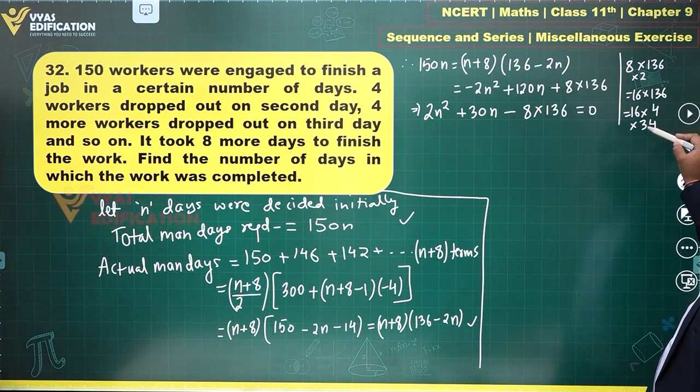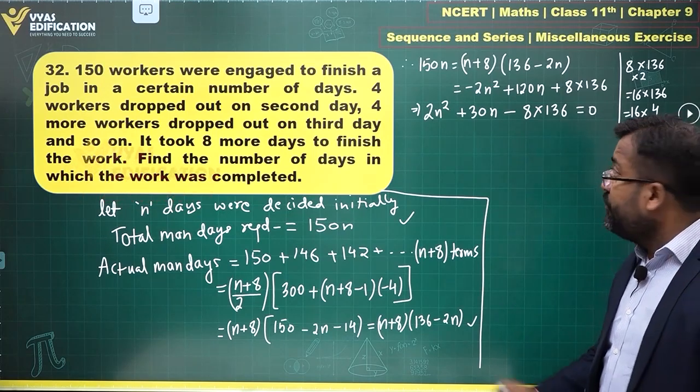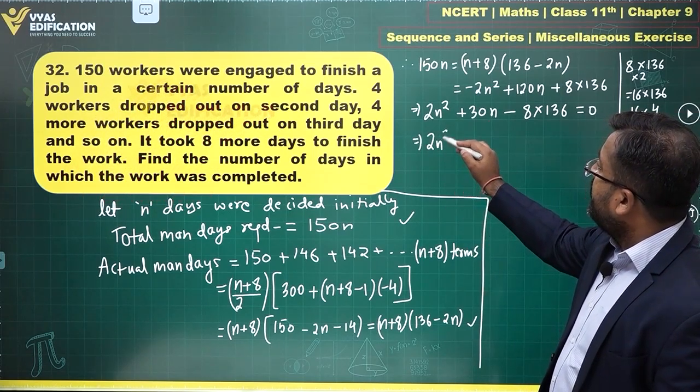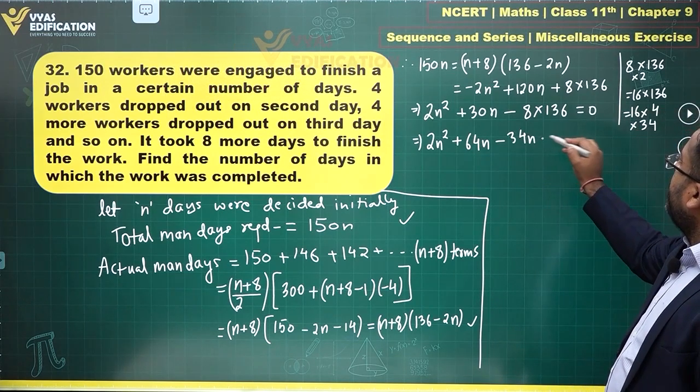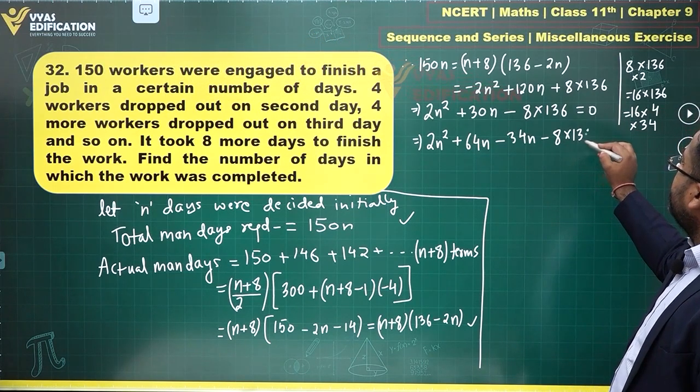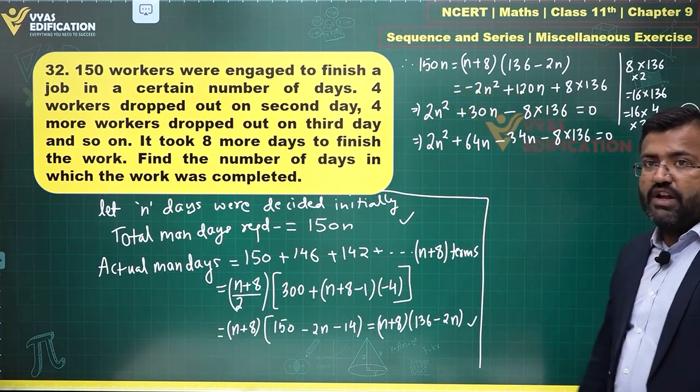16 times 4 is 64. This is 34. 64 and 34, the difference is 30. So 2n square plus 64n minus 34n minus 8 into 136 is equal to 0. This is what I can write it as.